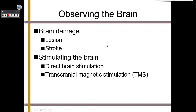We can also observe the brain by studying damage from lesions or strokes. We can also stimulate the brain through direct brain stimulation — cutting open the skull and poking the brain with an electric probe. When that happens, you might swear you smell bacon or feel like someone is touching your leg. We also use transcranial magnetic stimulation or TMS, which is essentially the same thing but using high-powered magnets so we don't have to cut open the skull.